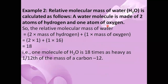The relative molecular mass of water: H2O contains 2 atoms of hydrogen and 1 atom of oxygen. So the relative molecular mass = 2 × (mass of hydrogen) + 1 × (mass of oxygen) = 2 × 1 + 1 × 16 = 18. So the water molecule is 18 times one-twelfth the mass of carbon-12.